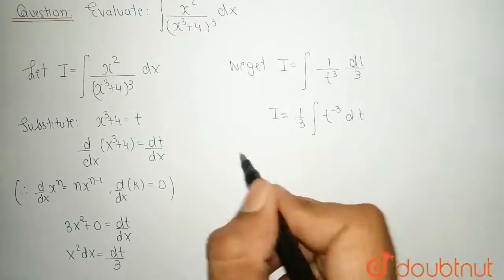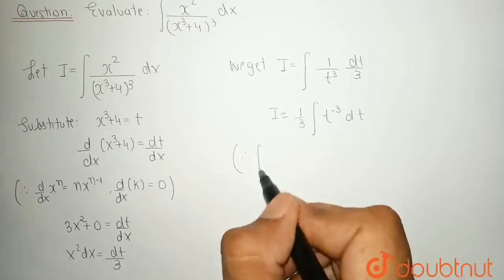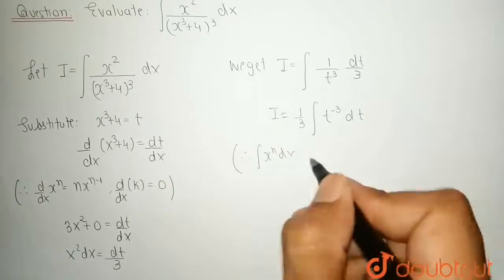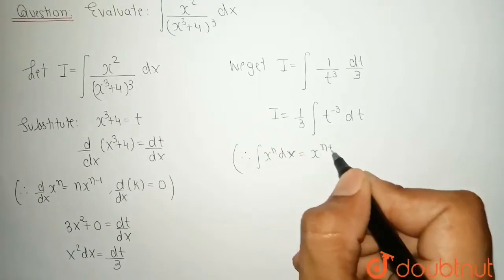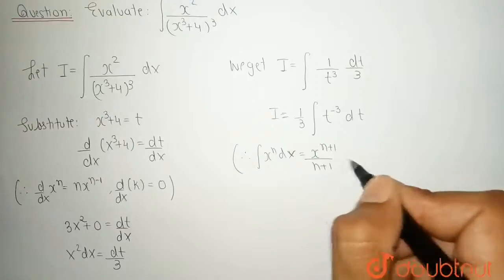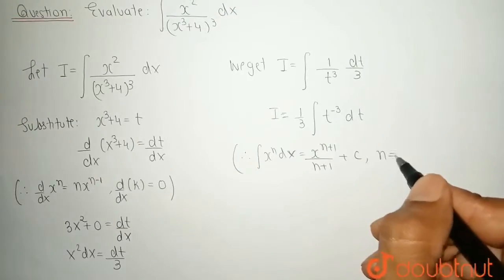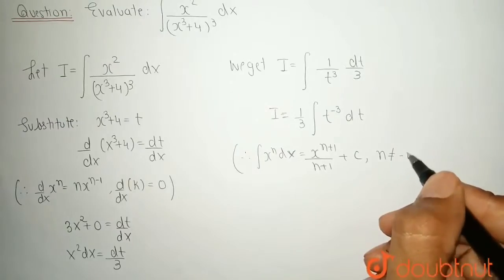Again, we know the formula integration of x to the power n dx is x to the power n plus 1 upon n plus 1 plus c. Where c is an integration constant and n cannot be equal to minus 1.